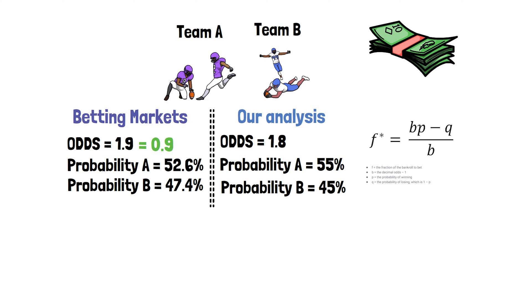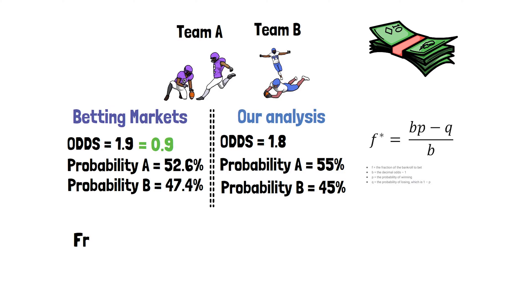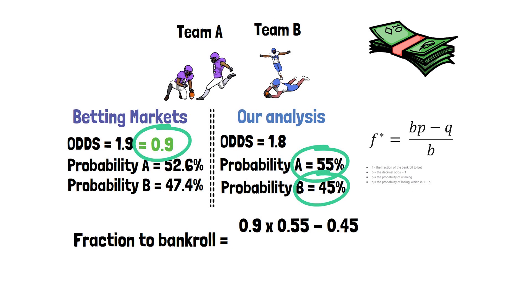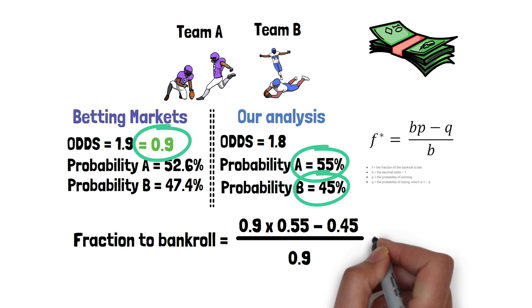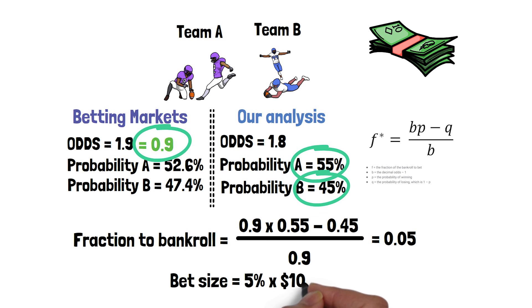Say we have $1,000 in our betting account — how much should we wager on this outcome? With all these metrics we can use the Kelly Criterion to find out. The amount offered on the exchange was $1.90, meaning we get a 90% return on our dollar. We know the true probability of winning is 55% and the probability of losing is 45%. The equation is simply: 0.9 × 0.55 − 0.45, divided by 0.9. This gives us 0.05, which is 5%. Multiplying our bankroll of $1,000 by 5% gives us $50 — the optimum amount to wager on this event.